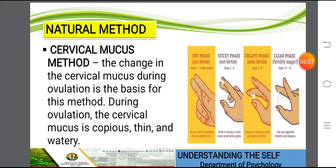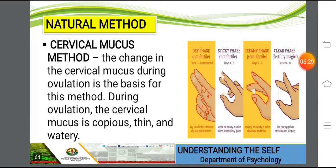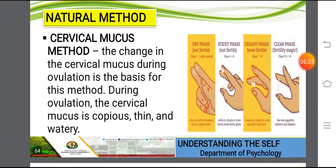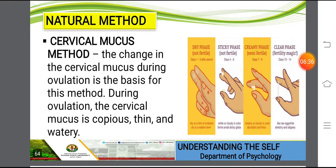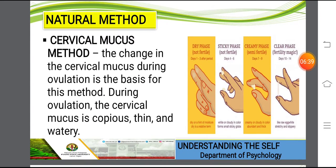Another natural method is the cervical mucus method. The change in cervical mucus during ovulation is the basis for this method. During ovulation, the cervical mucus is copious, thin, and watery. In the dry phase, days 1 to 3 after period, the woman is not fertile. In the sticky phase, days 4 to 6, still not fertile. In the creamy phase, days 7 to 9 after period, she is semi-fertile. In the clear phase, days 10 to 14, she is fully fertile.